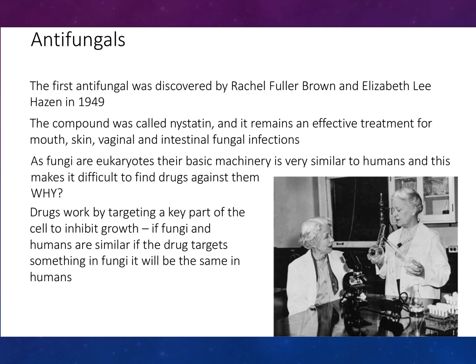Looking at antifungals. Antifungals were first discovered by Rachel Fuller Brown and Elizabeth Lee Hazen in 1949. The compound was called Nystatin and it remains an effective treatment for mouth, skin, vaginal, and intestinal fungal infections. As fungi are eukaryotes, their basic machinery is very similar to humans, and this makes it difficult to find drugs against them. Drugs work by targeting a key part of the cell to inhibit growth — if fungi and humans are similar, if the drug targets something in fungi, it will be the same in humans.